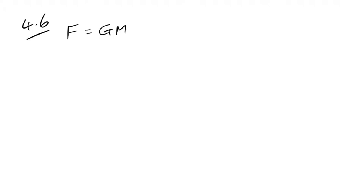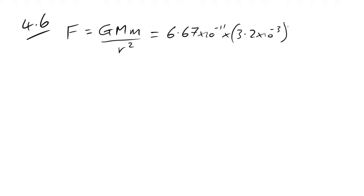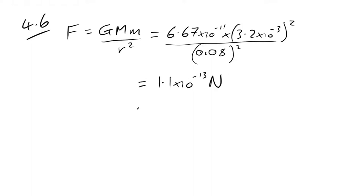The student says gravitational force has no significant effect on the angle. Is this correct? The gravitational force between the spheres = GMm/r² = G × (3.2×10⁻³)² / (separation)² = 1.1×10⁻¹³ N. This is much, much smaller than 3.8×10⁻³ N, so the statement is valid.